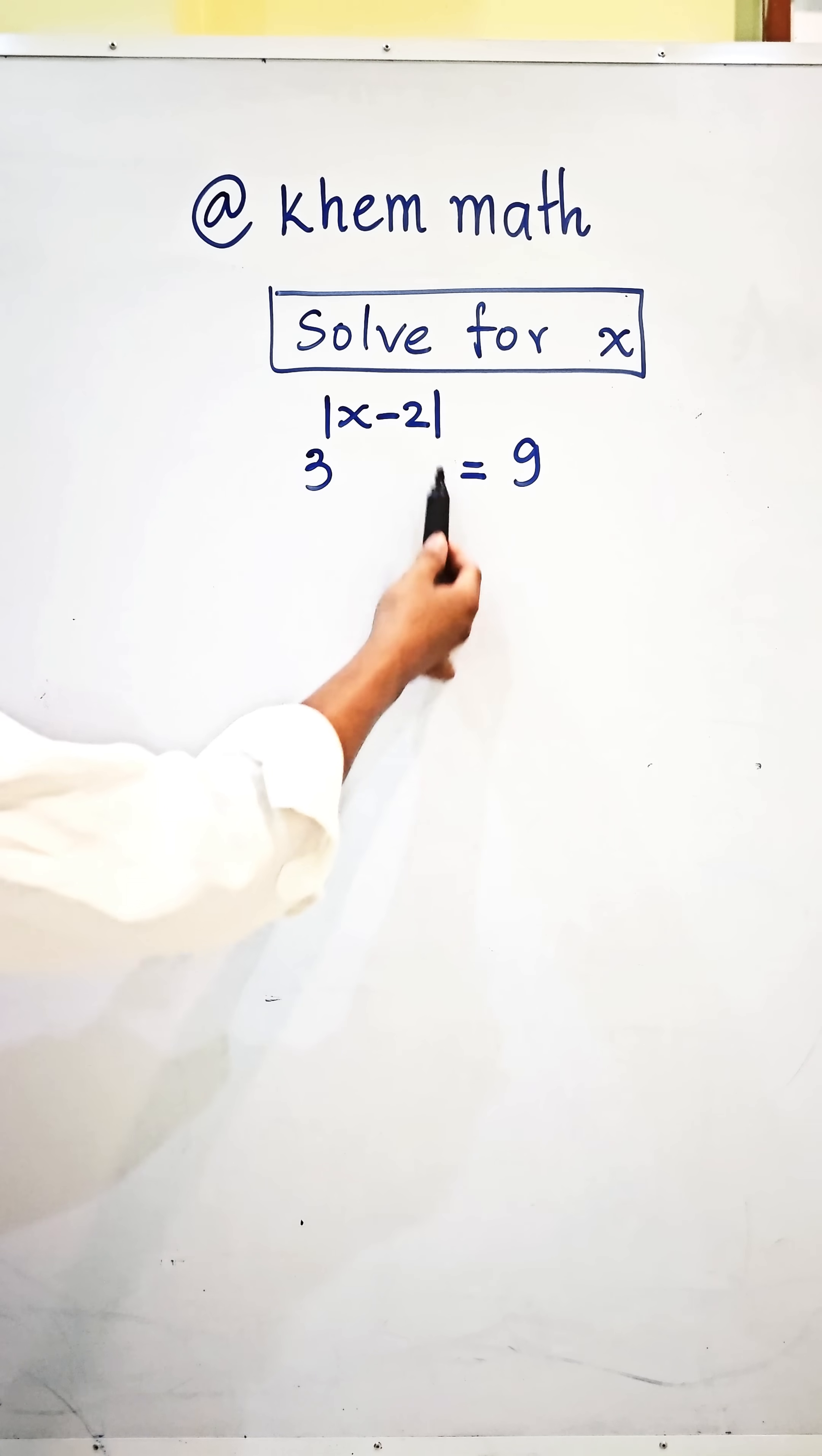So for this, here is the exponential equation: 3 to the power of absolute value of x minus 2 equals 9. Now 9 can also be written as 3 squared, so we get 3 to the power of absolute value of x minus 2 equals 3 squared.